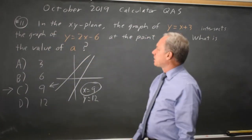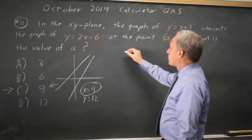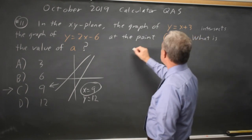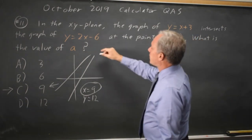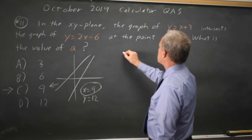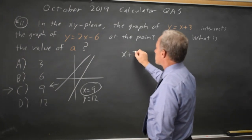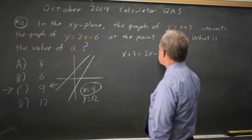Alternatively, I could do this by hand. And if I didn't have a graphing calculator, I probably would. Since these two y values are equal at the point of intersection, the expressions are equal to each other: x plus 3 is equal to 2x minus 6.